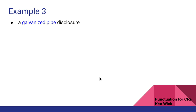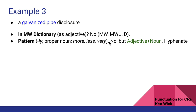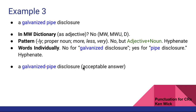Example three: galvanized pipe disclosure. It's not found in any dictionary. The pattern check — it's not one of the non-hyphenated patterns, though it is adjective plus noun, which means it's up to you to decide. Since it's not in the dictionary, I say it's hyphenated. Individually, it's not a 'galvanized disclosure,' but you could say 'pipe disclosure.' So: galvanized-pipe disclosure is an acceptable answer.